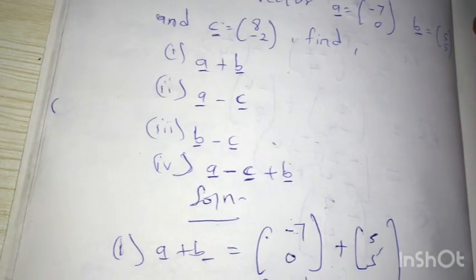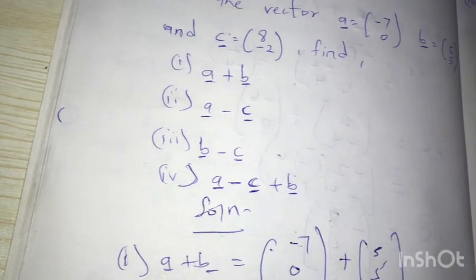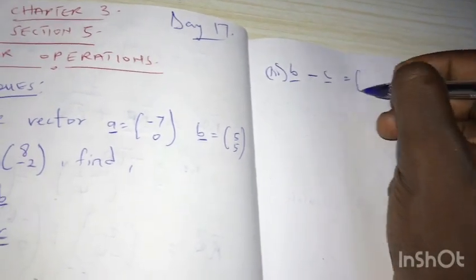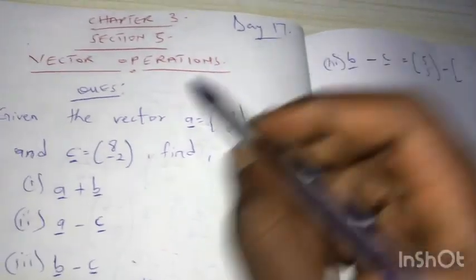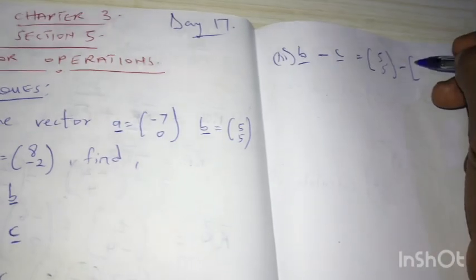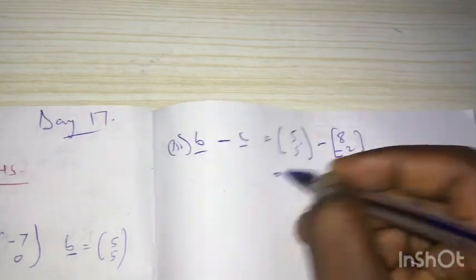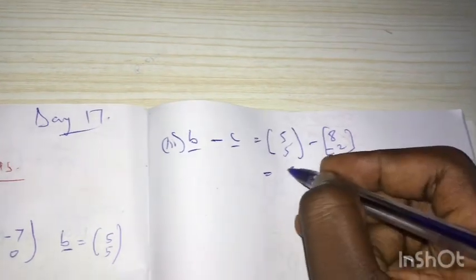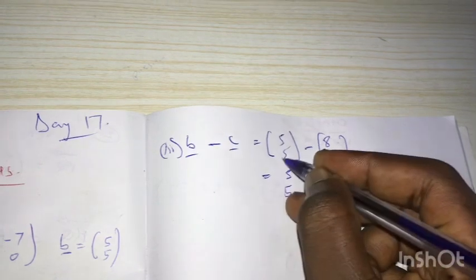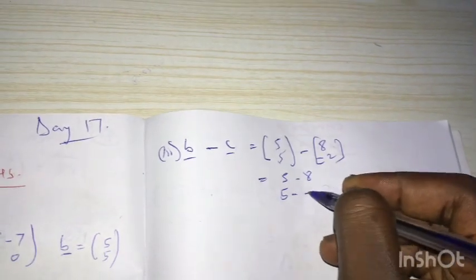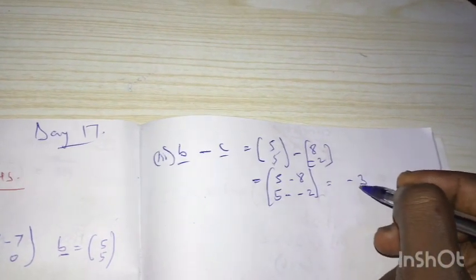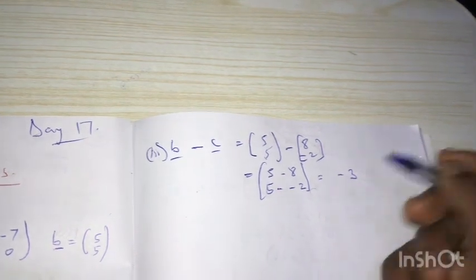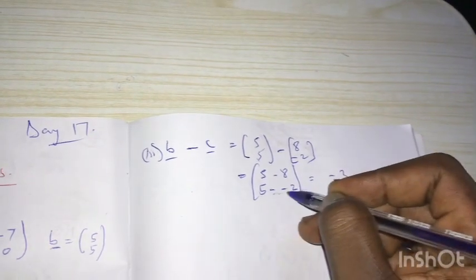Third one: b minus c. B is (5, 5) minus c, which is (8, -2). Top minus top, down minus down: five minus eight, and five minus negative two. Five minus eight is negative three — if you have five and borrow eight, you pay five and go to negative three. Negative becomes positive, so five plus two is seven. So our answer is (-3, 7).